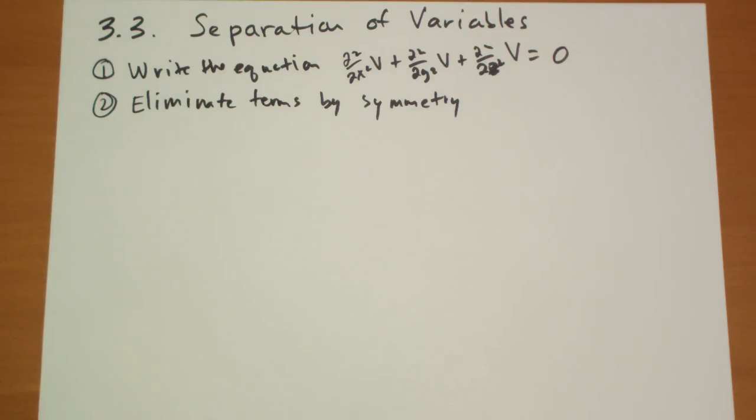then it simply can't vary by z. It has to be the same for any z, so you can just cross off that term. Now you're only solving a differential equation with two variables, so it becomes much easier the more you can get rid of.